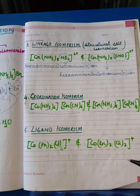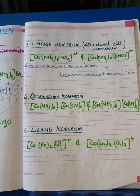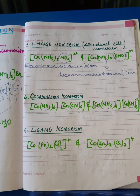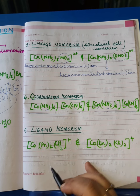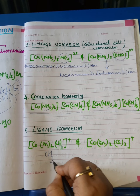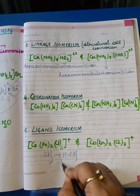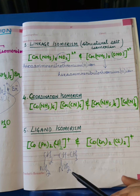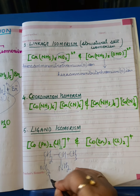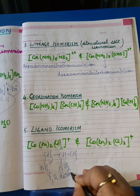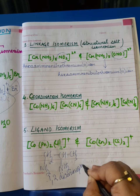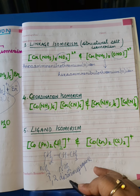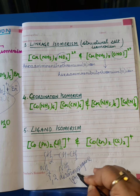The last isomerism is ligand isomerism. This is a very special case and arises when the ligand present in the complex can exist in more than one isomeric form. The best example is the ligand CH₂–CH(NH₂)–CH₃, where both the CH₂ and CH groups are bonded with amino groups. This compound is known as 1,2-diaminopropane, abbreviated as PN.